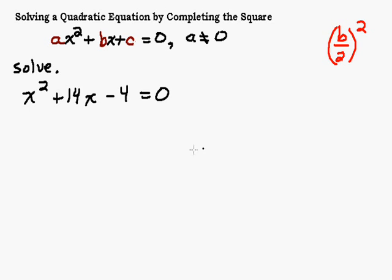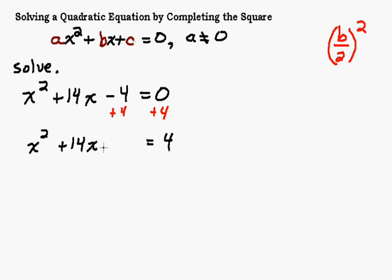Step 1: we want to set up x squared plus 14x and then a blank, so we move this minus 4 out of the way over to the other side. We want a perfect square trinomial on one side, so we move that minus 4 to create it. Now we're going to add something to the left side to make a perfect square trinomial.